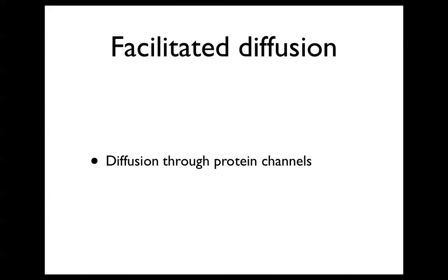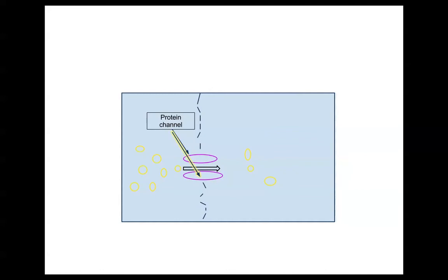Facilitated diffusion is the diffusion through protein channels. As you can see, these protein channels help the diffusion, so the molecules move from high concentration to low concentration through these protein channels.